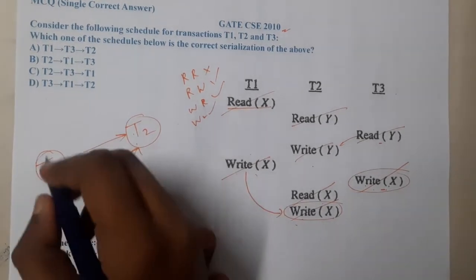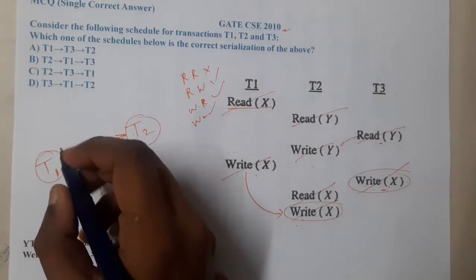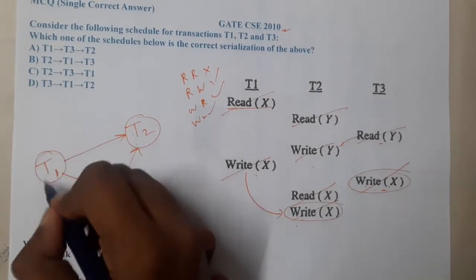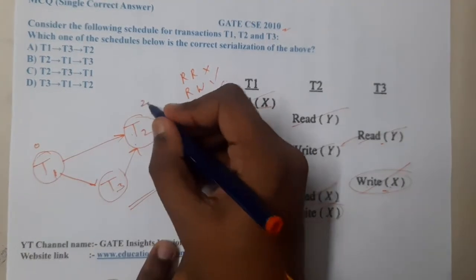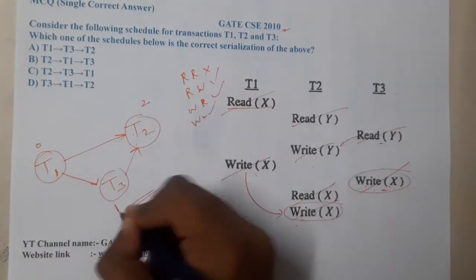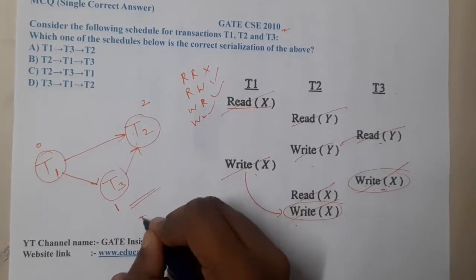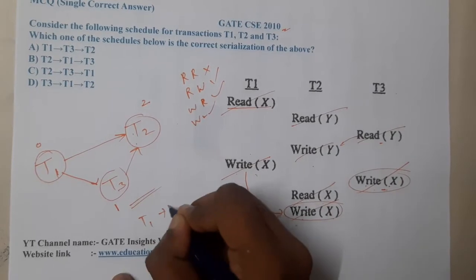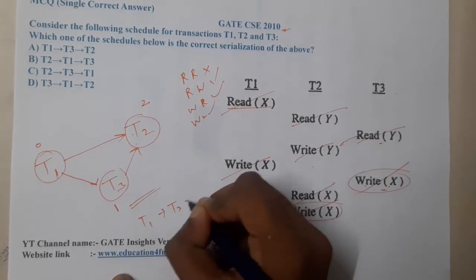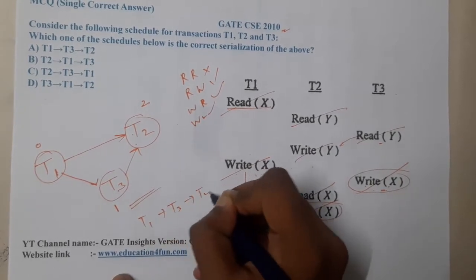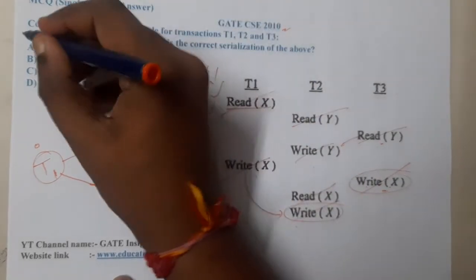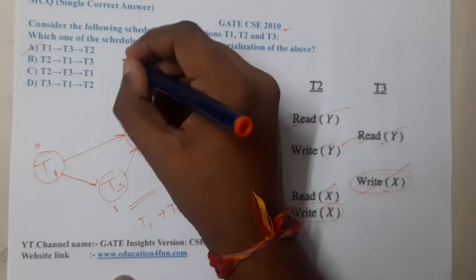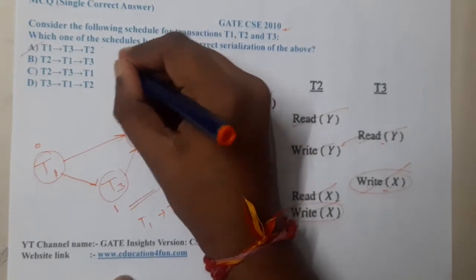To find the topological order, we count incoming edges: T1 has zero incoming edges, T3 has one incoming edge, and T2 has two incoming edges. So the topological order is T1, T3, T2 — and option A is the correct answer.